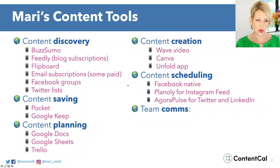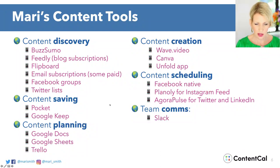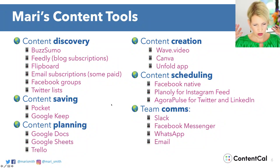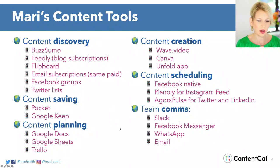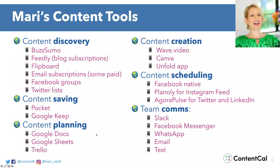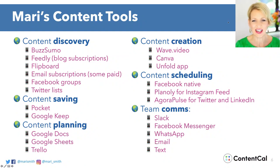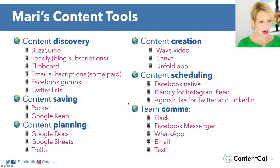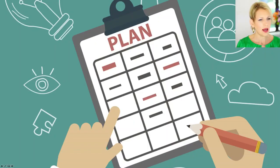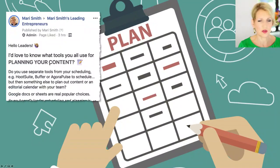When you look at this slide it's overwhelming — and this is not even an exhaustive list. Yesterday I asked the members of my leading entrepreneurs group what different tools they use for planning their content. I wanted to share a few of those before we get to the live demo of ContentCal. Google Docs and Sheets are popular choices. Donna Gilliland uses Buffer, Excel spreadsheets, and Trello. Kathy uses Blog Energizer's content planner for initial planning and then schedules in Facebook — I wasn't familiar with that, but it looks like a great generator of ideas.